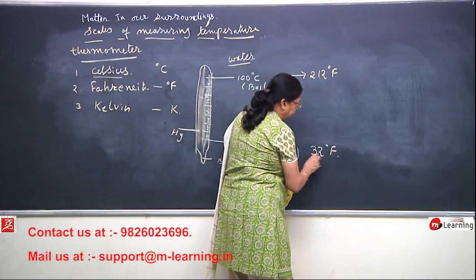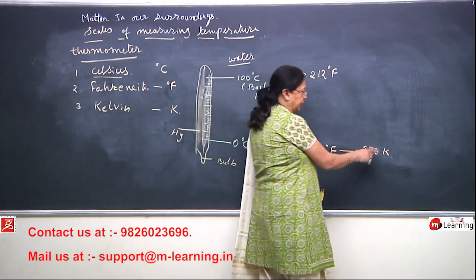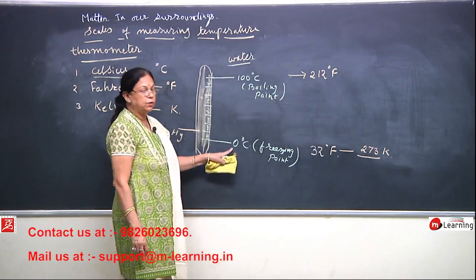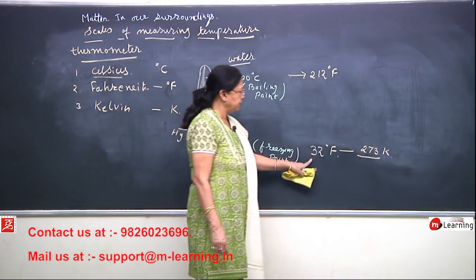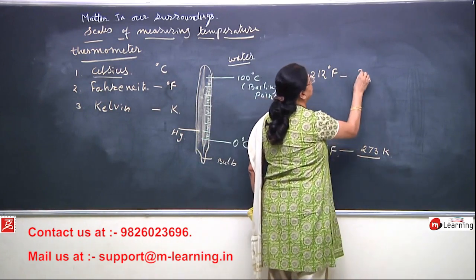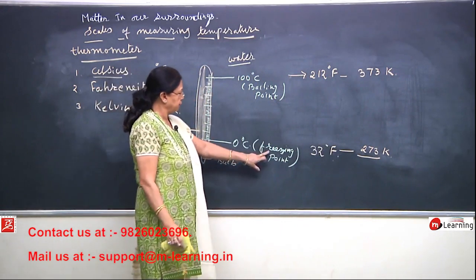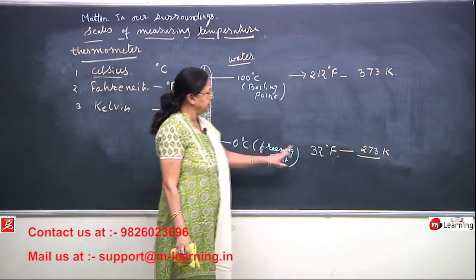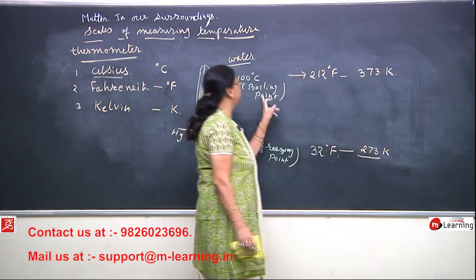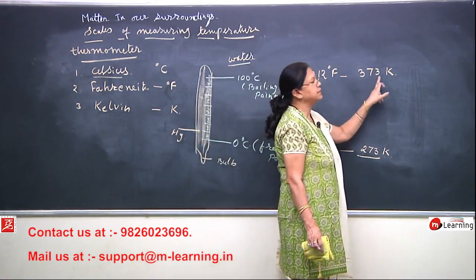In Kelvin, 0 degree Celsius coincides with 273 Kelvin — note it is not denoted by degree. So 273 Kelvin equals 0 degree Celsius or 32 degree Fahrenheit, and 100 degree Celsius equals 373 Kelvin. So the freezing point of water is 0°C = 32°F = 273 K, and the boiling point of water is 100°C = 212°F = 373 K.